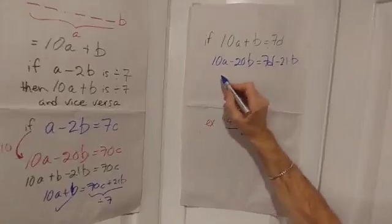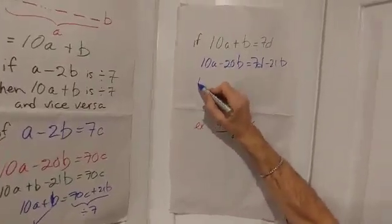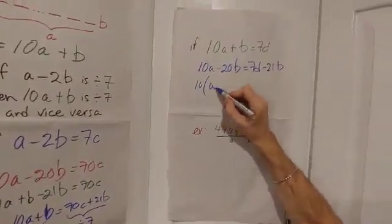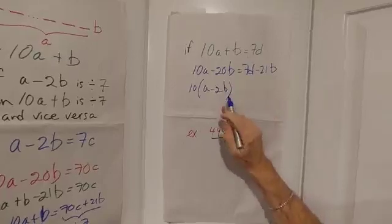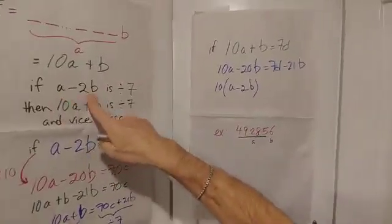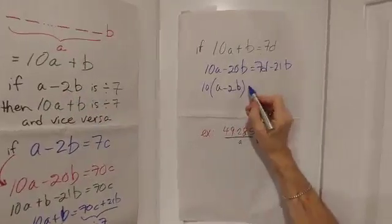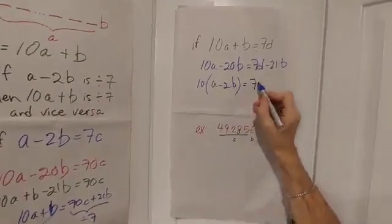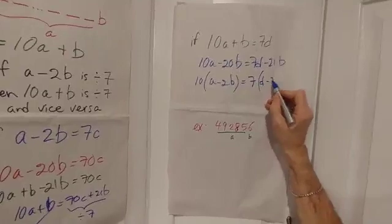Now let's factor both sides here. I get 10 times A minus 2B. And A minus 2B, don't forget, is the thing I'm supposed to prove is divisible by seven. And on this side, I get 7 times D minus 3B.